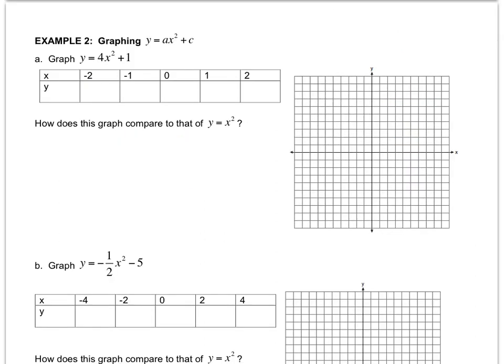All right. In this one, we're going to combine the two things that we've learned so far. We're going to have an a value and incorporate a c value. So we're going to not only change the width, but also change the shift.